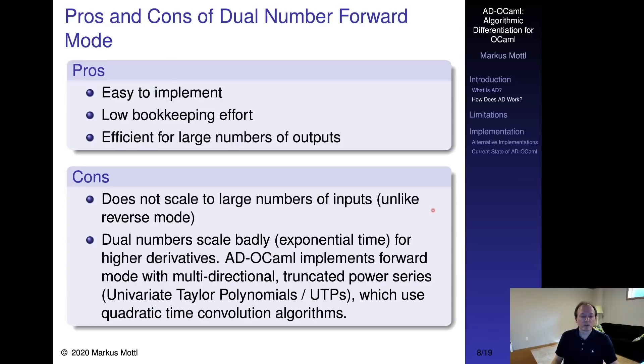Forward mode AD with dual numbers is easy to implement and has comparatively low bookkeeping requirements. Sadly, it is only efficient if there are a few inputs to a program. In practice, this is often the less interesting application case. If you have millions or even billions of parameters, it is infeasible to calculate gradients one by one using forward mode. Reverse mode AD, which we will show next, can address this efficiently.